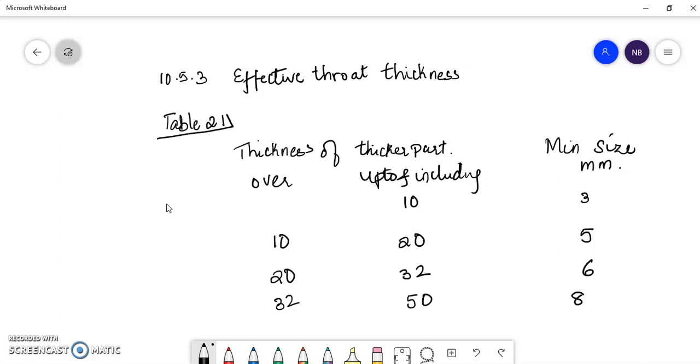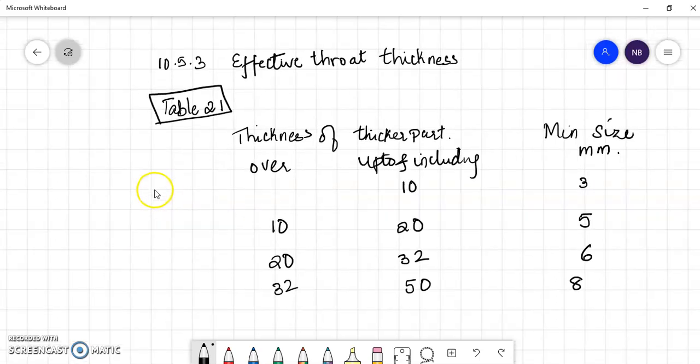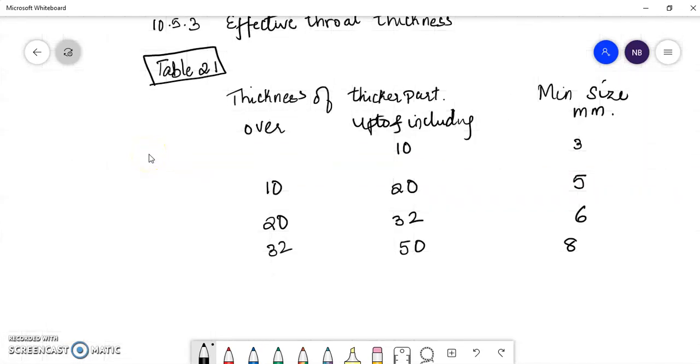So this table 21 is to be referred and the size of the weld is to be decided depending upon what the thickness of the plate is.